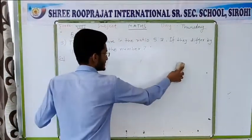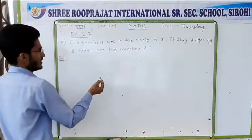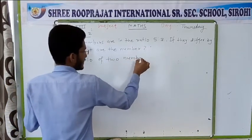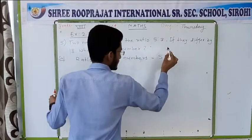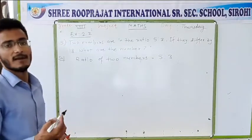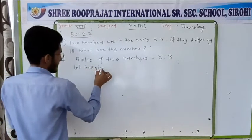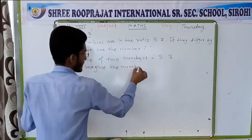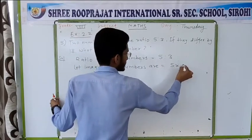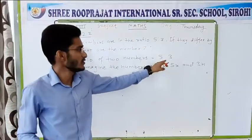Ratio means you divide by the same number. So suppose we divide by x, and then we will multiply again. So first of all, the given ratio of two numbers is 5:3. How do we get 5:3? If we divide a number by the same number we get 5:3. Now we will do just the opposite — we will multiply both numbers by the same number. So the numbers are 5x and 3x. If you divide them by x, you get 5 ratio 3.